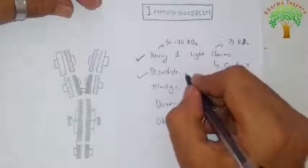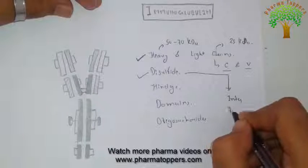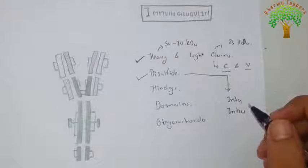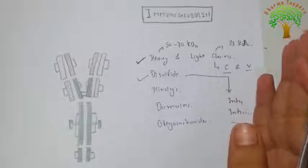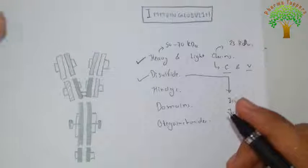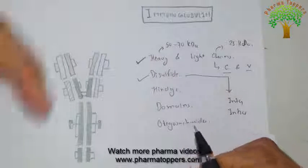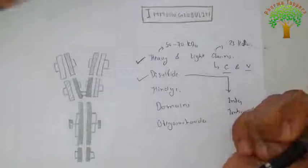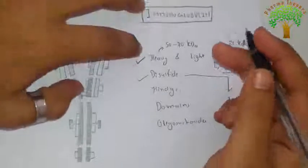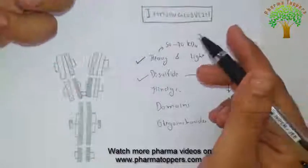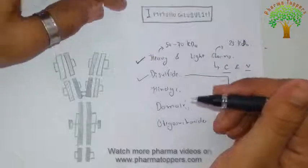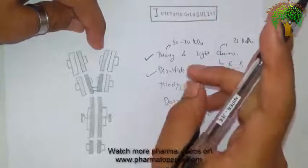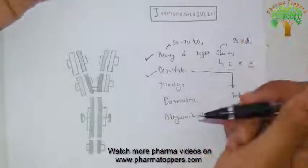Next are disulfide bonds. As mentioned, they can be inter-chain or intra-chain as shown in the structure. The heavy and light chains are held together by inter-chain disulfide bonds, which involve non-covalent interactions. The number of inter-chain disulfide bonds varies among different immunoglobulin molecules. Within each polypeptide chain there are also a number of intra-chain disulfide bonds.